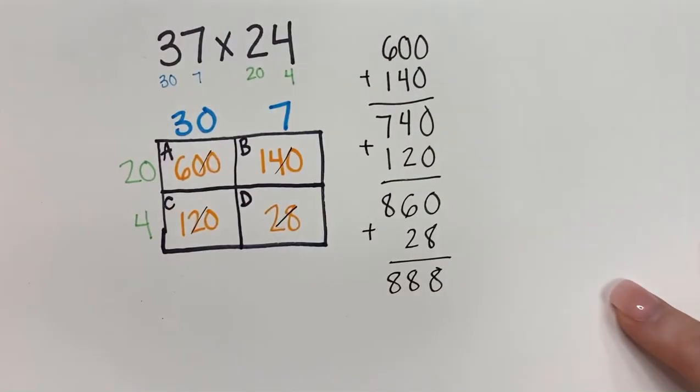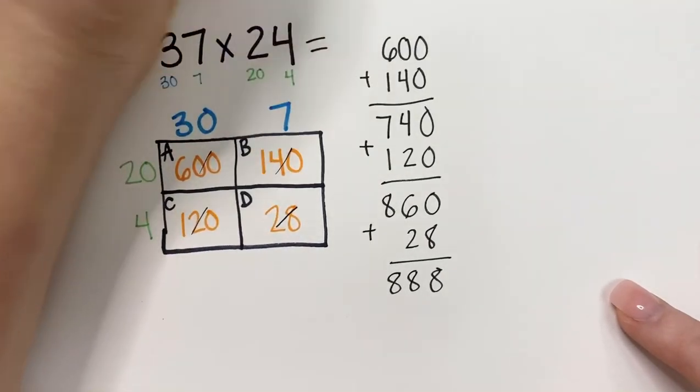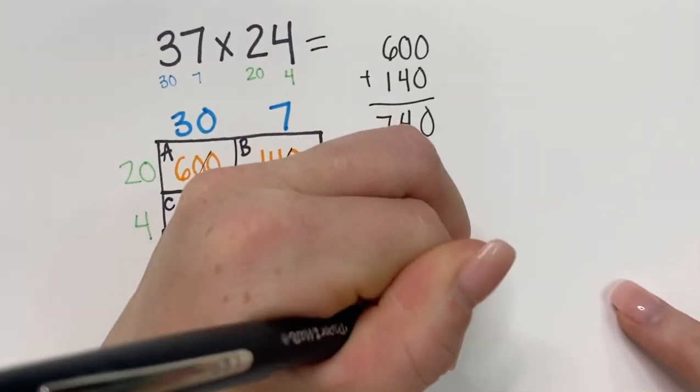Oh, my goodness. Look at that answer. So, 37 times 24 equals 888.